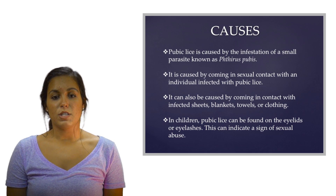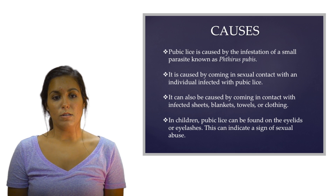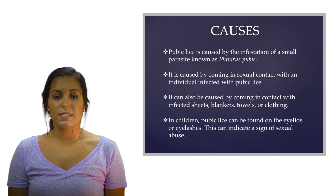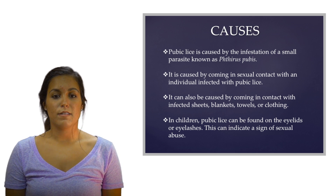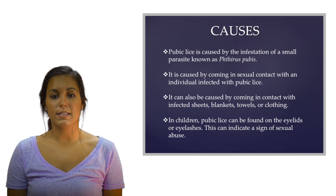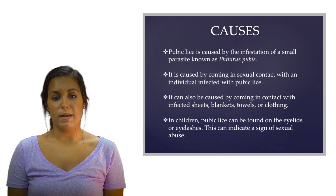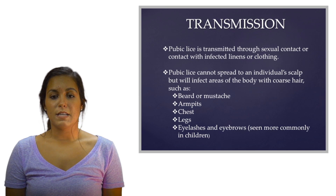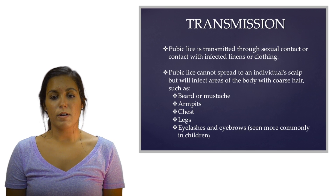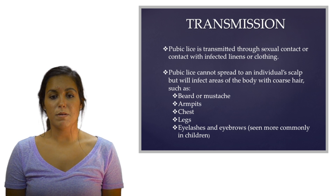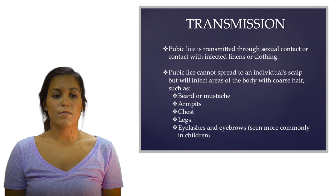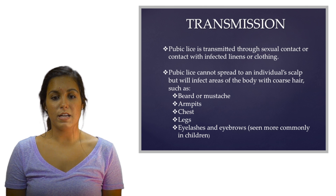Pubic lice has three stages: the egg, the nymph, and the adult. The eggs, also known as nits, are laid on the hair shafts. Females lay approximately 30 eggs during their 3–4 week lifespan. Eggs hatch in about a week and become nymphs, which look like smaller versions of the adults. Nymphs undergo three growth stages before becoming adults. They are found only on the human host and require human blood to survive. If adults are removed from the host, they will die within 24–48 hours without blood feeding.